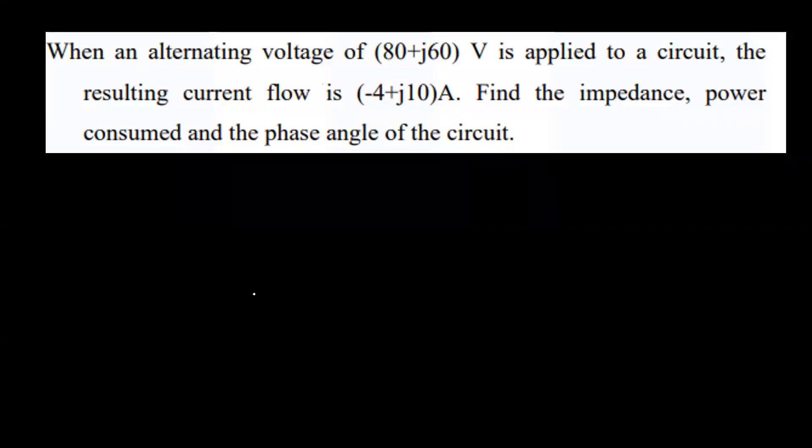When an alternating voltage of 80 plus j60 volts is applied to a circuit, the resulting current flow is minus 4 plus j10 amperes. Find the impedance, power consumed, and the phase angle of the circuit.